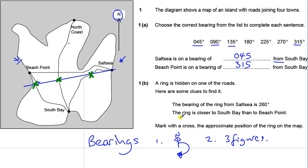Now the other clue is that it's closer to South Bay than Beach Point, so it's got to be closer to here than here, so it can't be that one. It's not going to be that one because that's close to Beach Point. That one is close to Beach Point as well. This one is the one that's close to South Bay, so that's the one we need to mark on with our cross. Okay, finished.